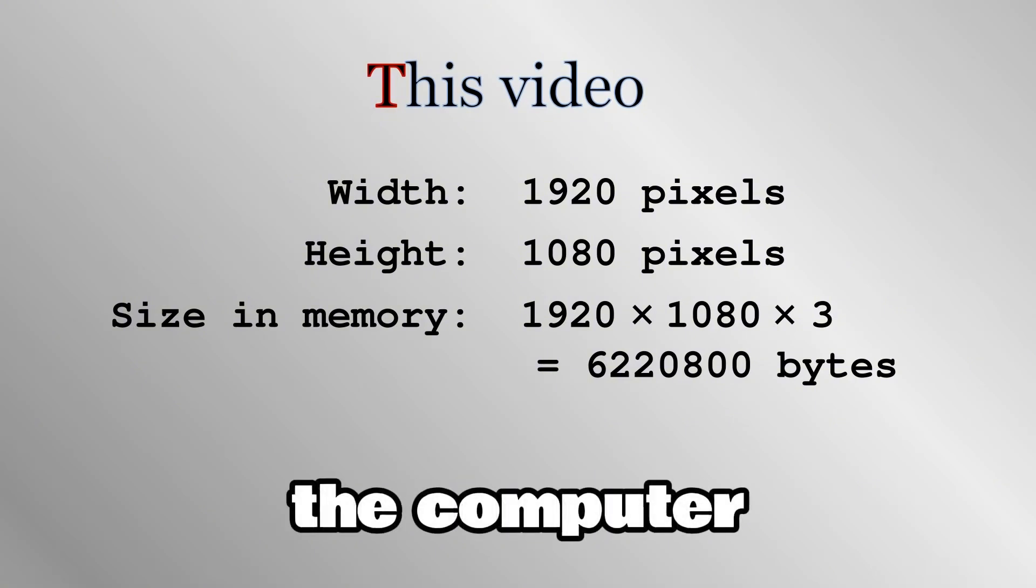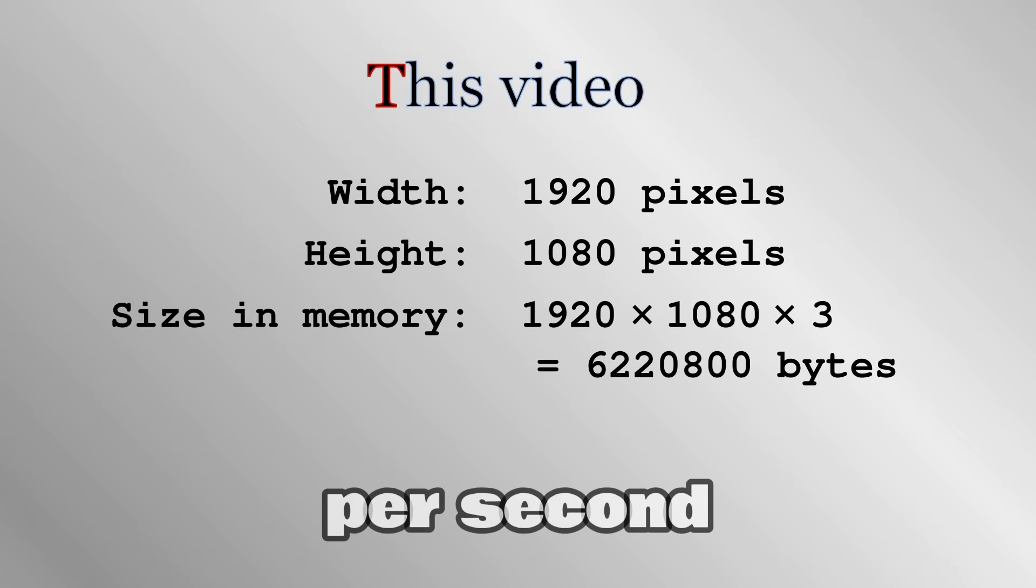In simplest terms, the computer must update this many bytes in memory, 30 or 60 times per second, and send the result to the display. So for example if you full screen this video in its maximum resolution, each frame would take up this many bytes in memory.